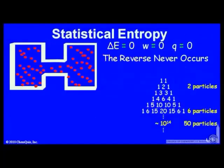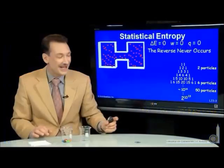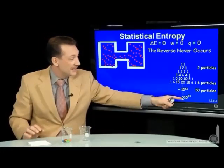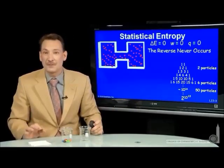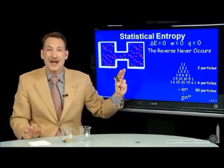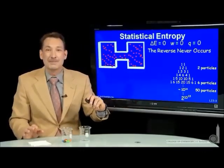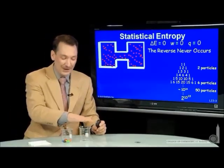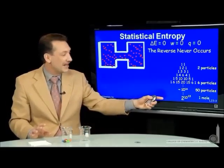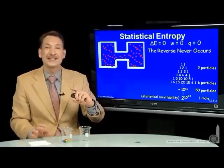That's dramatic for just 50 particles. Imagine going to a mole of particles — 2 to the power of 10²³ is astronomically large. In fact, it's bigger than the total number of particles in the universe. So it's astronomically bigger than astronomically more likely to find the particles equally distributed between both sides. We call that statistical inevitability.